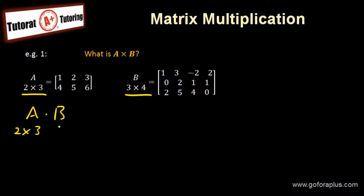2 by 3 and 3 by 4, we really look at these numbers. These two numbers that stick together, they must be the same. If they are not the same, you cannot do multiplication. In this case they are the same.